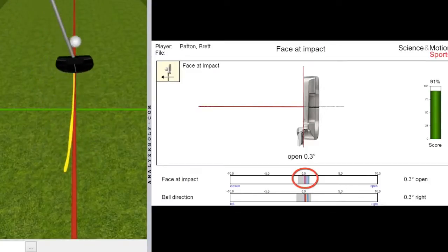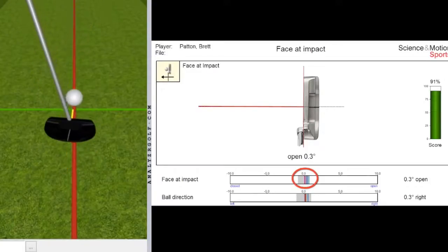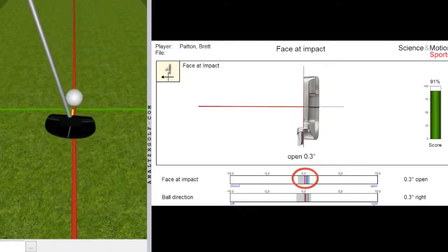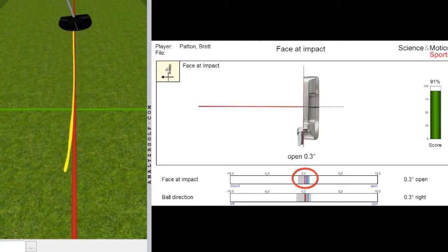So we've used some great tools here through the SAM PuttLab 3D software and the Vizio putting mat to establish a clear picture in the player's mind as to what he was looking to achieve in his putting stroke, and establish some feels and sensations that he could generate some feedback for.